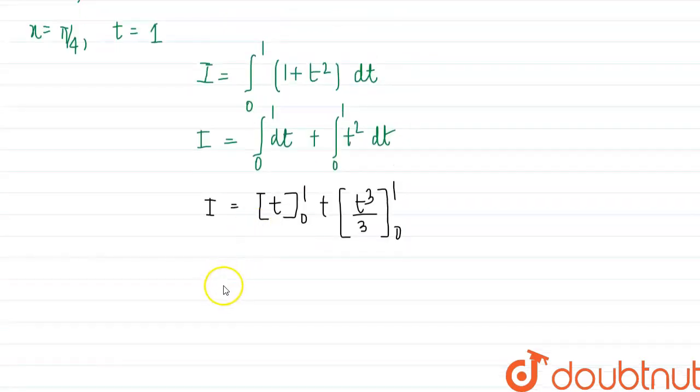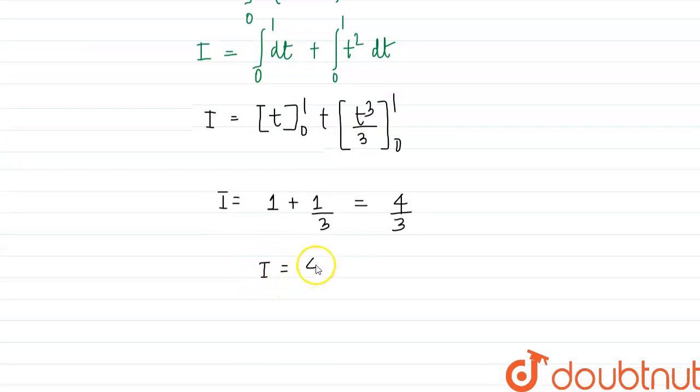So when placing the limits, this will become I is equal to 1 plus 1 by 3, and this is 0. So this is equal to 4 by 3. So the value of our integral is 4 by 3. This is our required answer.